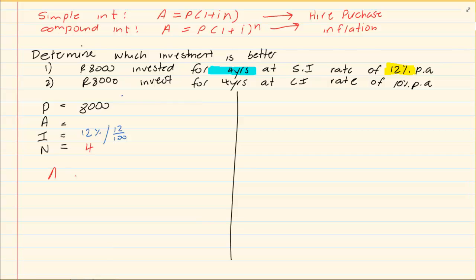We know it's simple interest so the formula is A equals P times 1 plus I times N. Substitute what you have. You then can use your calculator which will give us 11,840 Rand.